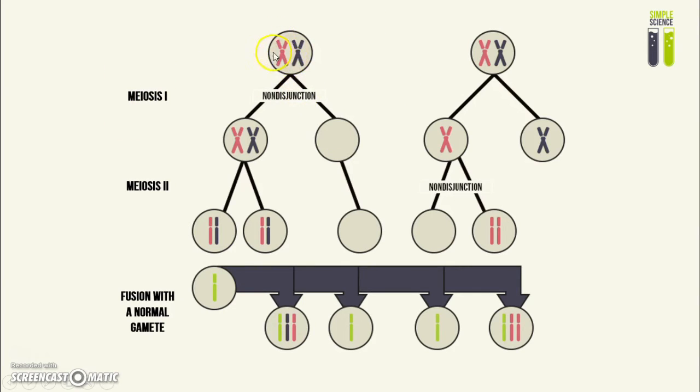Instead of these chromosomes moving to opposite poles of the cell in order to get divided in meiosis I, both of the chromosomes have moved to one pole. So then you end up with a cell with nothing inside, and a cell with double the chromosome number that it's supposed to have.